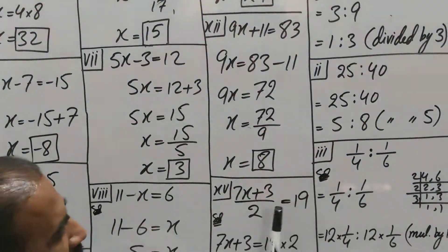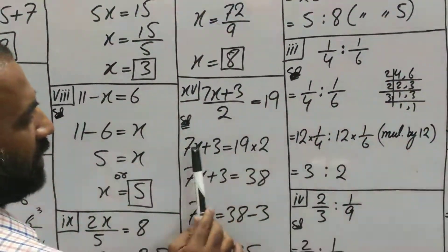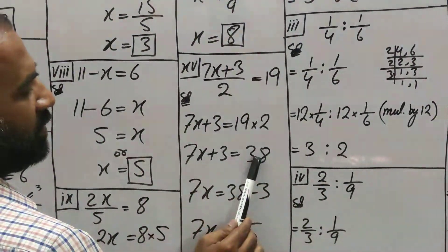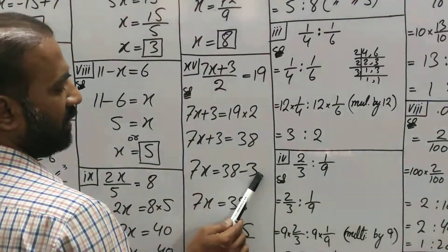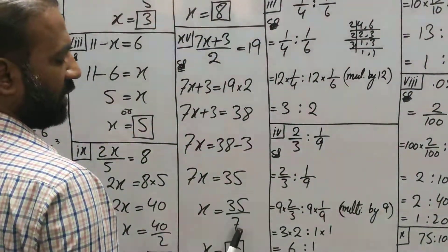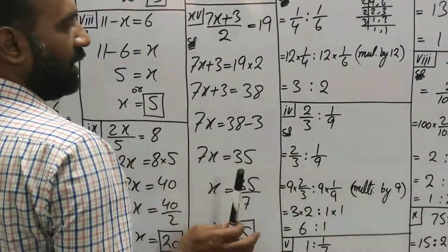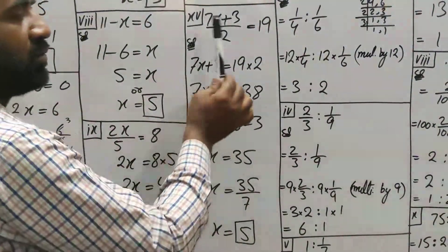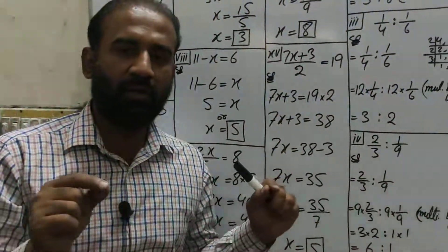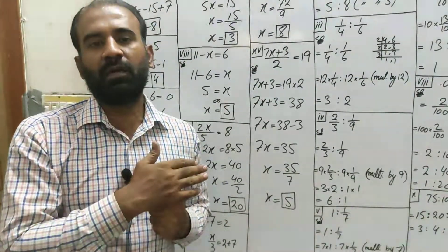(7x + 3)/2 = 19. 2 is dividing, so multiply by 19. 7x + 3 = 38. This +3 becomes -3. Minus 3 gives 35. 7 is multiplying, so divide. Cutting gives 7 × 5 = 35. First take plus/minus values there, then what's being divided, multiply it. Then plus and minus numbers, and finally what's multiplying, divide it.